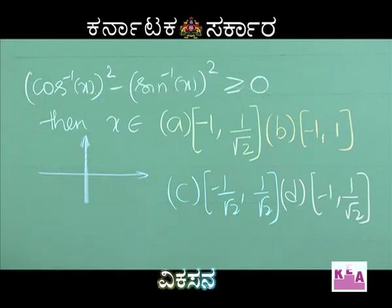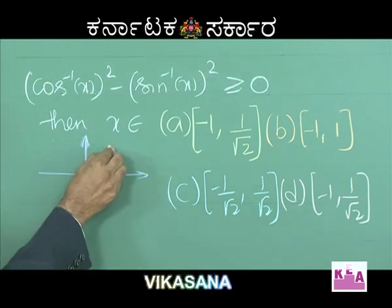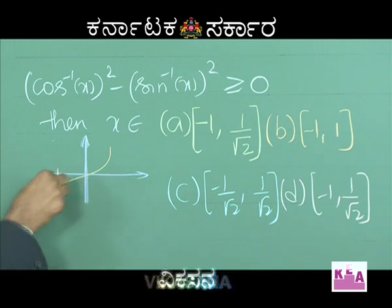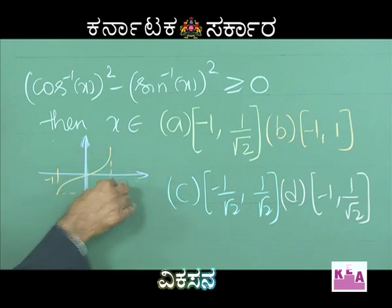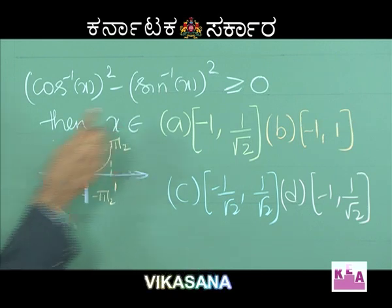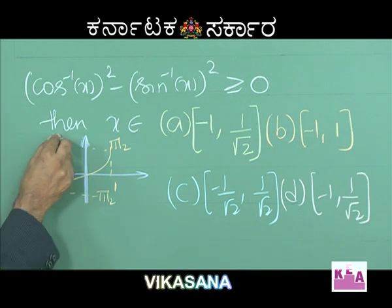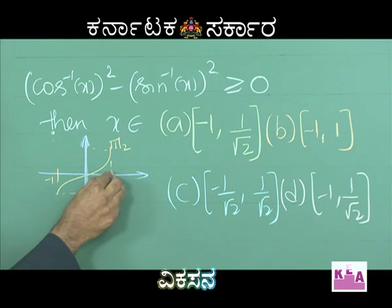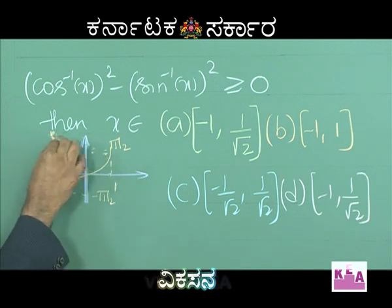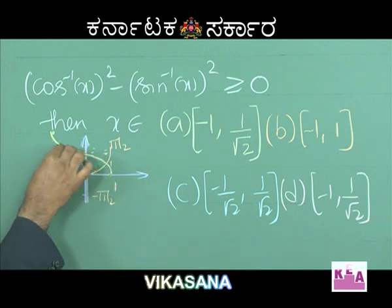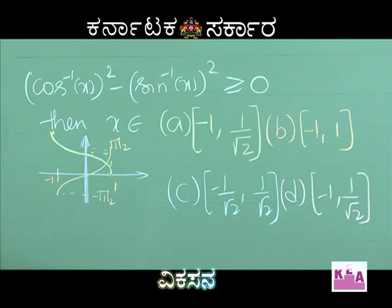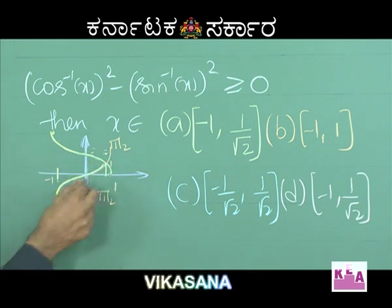For the graph of cos inverse of x: at x equals 1, the value is 0; at x equals 0, it meets the y-axis at pi by 2. So the graph of cos inverse of x goes from (1, 0) down to (-1, pi). Comparing cos inverse of x and sin inverse of x, the graph of sin inverse of x is below that of cos inverse of x. At the point x equals minus 1, consider the corresponding values.